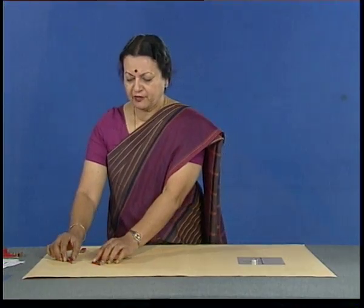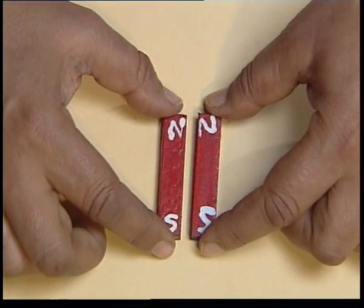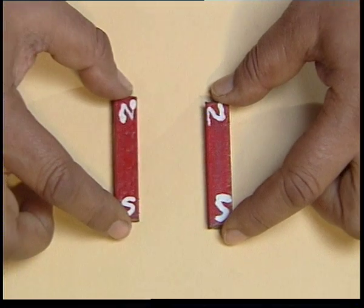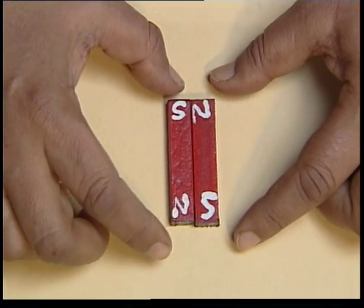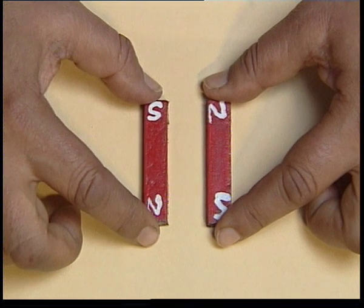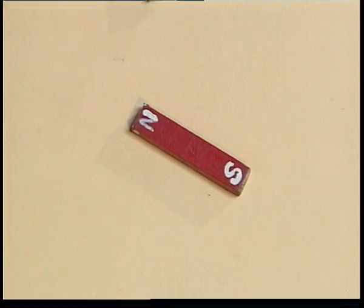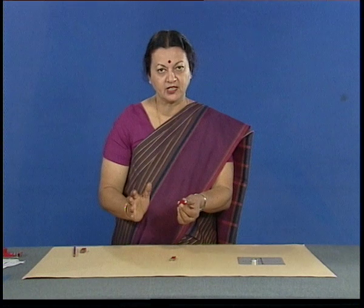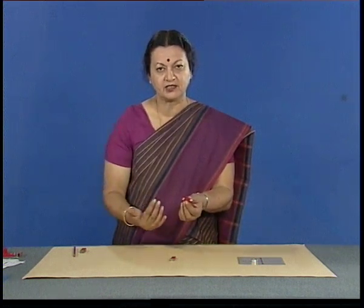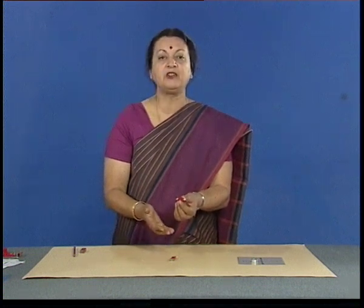So we can say that when two magnets are brought close to each other, a force of attraction or repulsion acts between them. Have you ever experienced this force? We will first bring this magnet close this way and then the other way. For every magnet, there is a region around it in which this force can be experienced. This region is called the magnetic field of the magnet.